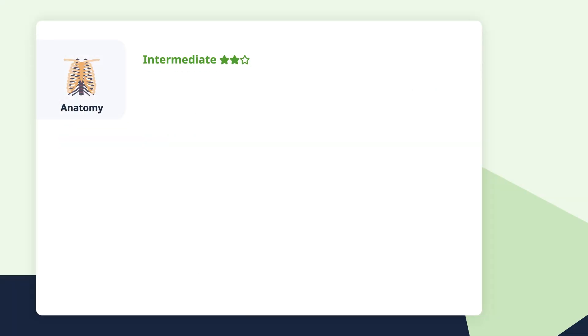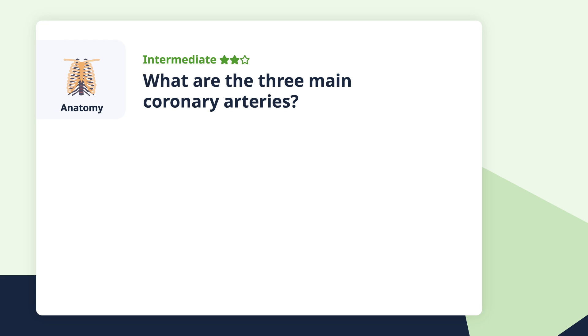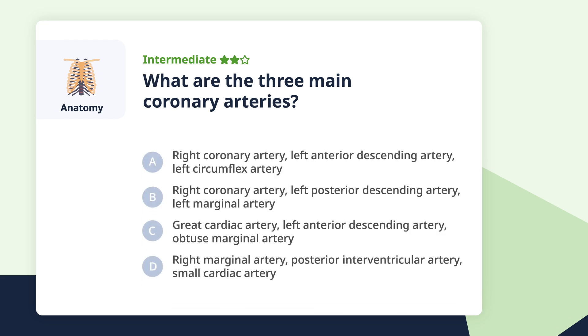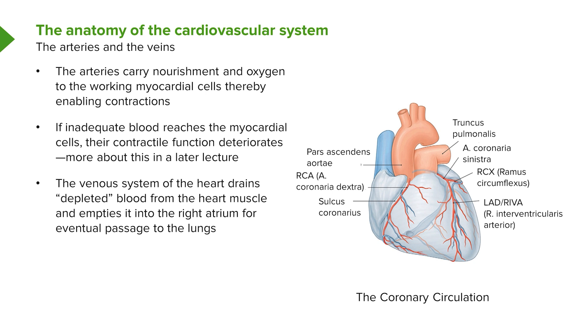Let's move on to the intermediate question. What are the three main coronary arteries? There are actually two main coronary arteries — the left coronary artery and the right coronary artery. You might say, wait — my uncle had a triple coronary bypass, where's the third coronary artery? The third coronary artery occurs because the left coronary artery branches early on after its origin into the left anterior descending coronary artery and the left circumflex coronary artery.